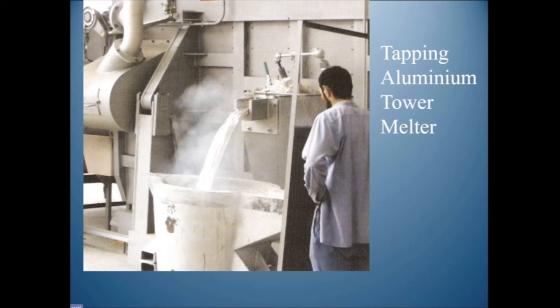This is happening in the aluminium industry, and it is not any individual's fault — this is how the whole process has been designed. We melt somewhere, pour it into something else, carry it, and pour it again. Every repeated pouring process is a disaster for the quality of the metal.